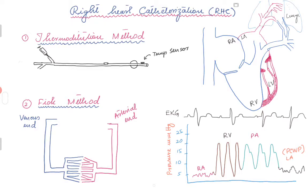This is the PA catheter — this is how it looks. It comes in 6, 7, and 8 French. The 7 French is usually what we call a VIP, and it goes through an 8 French sheath. It has a balloon, an atrial port, a right atrial port, and at the tip there is a transducer that transduces the pressure waveform. Right heart catheterization can be done through the IJ, subclavian, brachial, or femoral access.